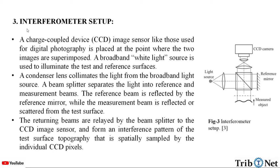The interferometer setup consists of a charge coupled device — a CCD image sensor, like those used for digital photography — which is placed at the point where the two images are superimposed. A broadband white light source is used to illuminate the test and the reference surfaces. A condenser lens collimates the light from the broadband light source. A beam splitter separates the light into the reference and measurement beams.